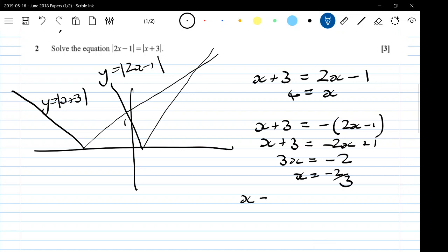And I would do it that way and get x equals 4 and x equals minus 2 thirds as my two answers for the question. Brilliant.